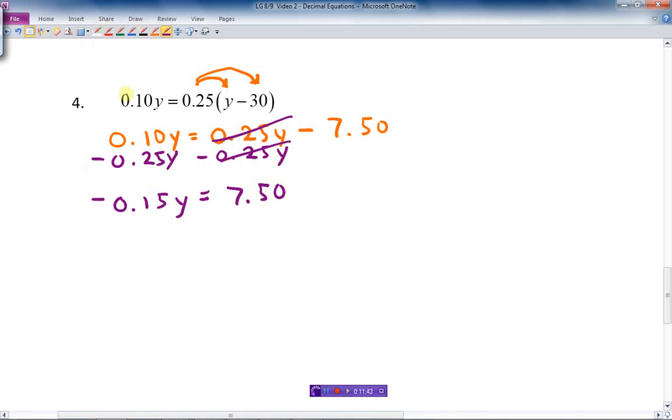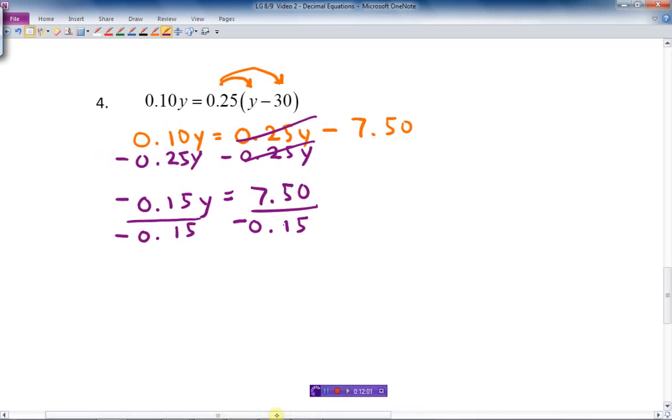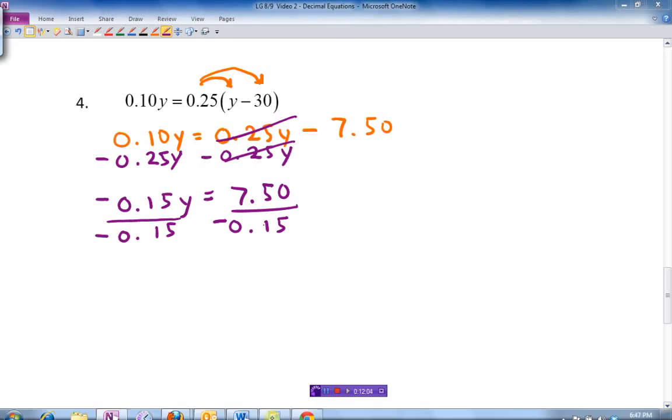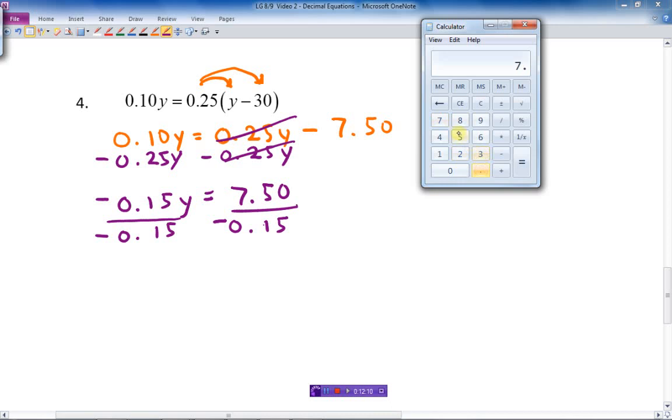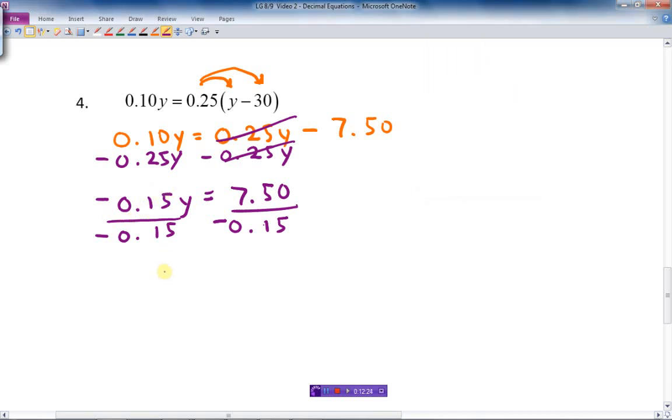Now I got one more step to do. And that's get rid of this negative 0.15. It's multiplying, so the opposite is I divide. And I divide this side. Let's bring up our calculator. 7.5 divided by 0.15 is 50. And it's going to be a negative because there's a negative there. So this will cancel out. That's y equals negative 50. And there we go. All done.